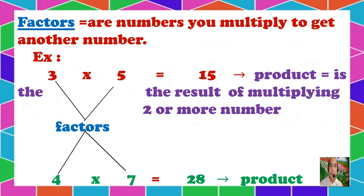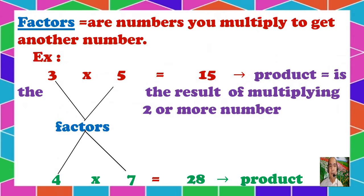Now let us take first factors. What do we mean by factors? Factors are numbers you multiply to get another number. The two numbers that when we multiply are called factors. So if we have 3 times 5, it will give us 15. 15 is the product as the result of multiplying 2 or more numbers. The factors are 3 and 5. So we call 3 and 5 factors of 15.